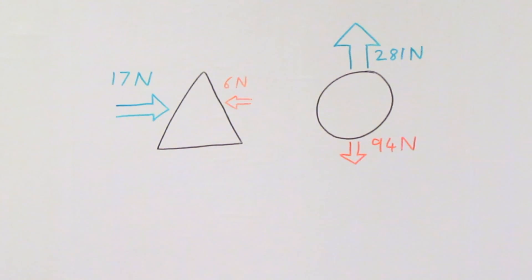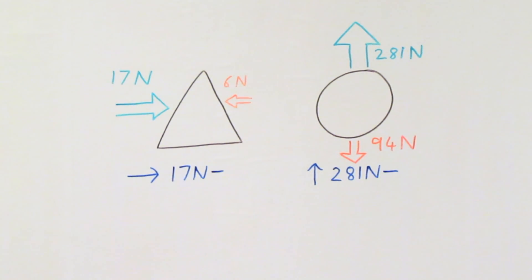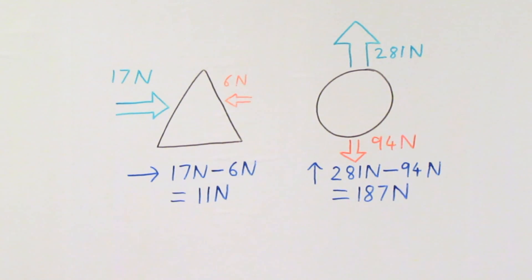Now at GCSE, that's as difficult as it gets to work out resultant force. You could be dealing with any object at all, but the principle is still the same. Firstly, figure out which direction overall is going to win in that tug of war. And then to work out the magnitude of the resultant force, you just do the large number take away the small number. And that's it. Simple isn't it?